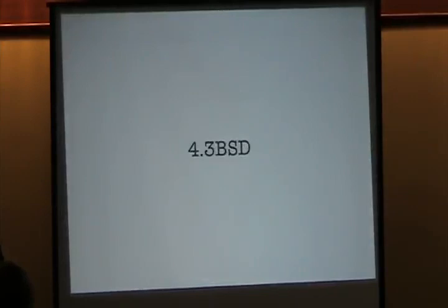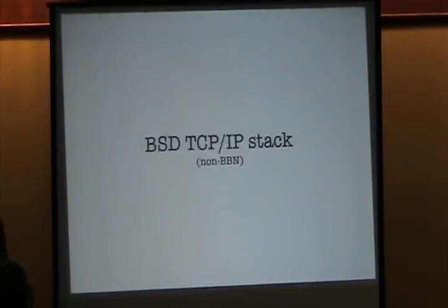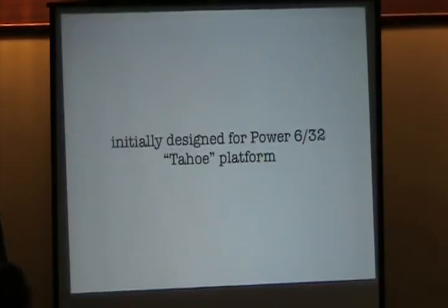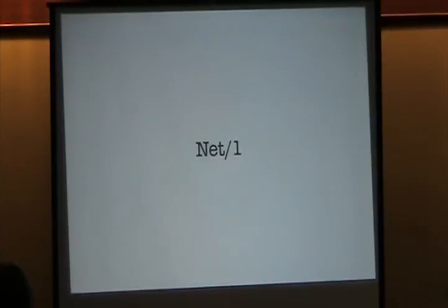In 1986, 4.3BSD was unleashed, incorporating numerous performance improvements including a non-BBN version of the TCP/IP stack, which was found to be superior by DARPA. In 1988, the next version of BSD was released: 4.3BSD Tahoe, named for the short-lived Power 6/32 Tahoe platform. This was an initial attempt at moving away from the VAX platform. Although Tahoe was unsuccessful, it helped introduce machine-independent code that would improve BSD's future portability. Up to this point, all versions of BSD included proprietary AT&T code and required licenses from AT&T for their use. These licenses had become prohibitively expensive, driving demand for an AT&T-free version of Unix.